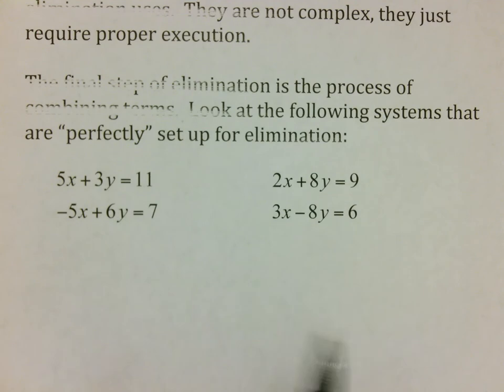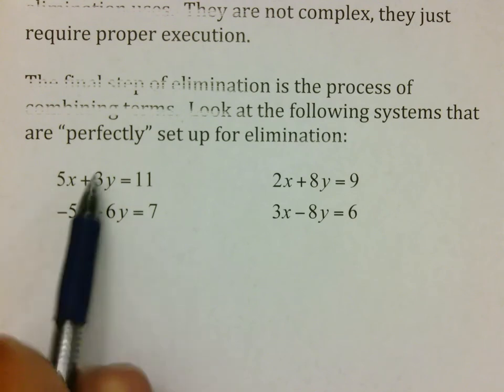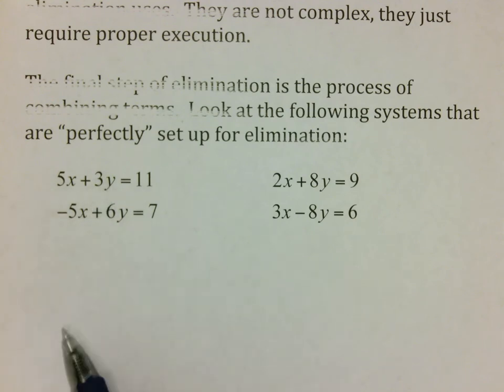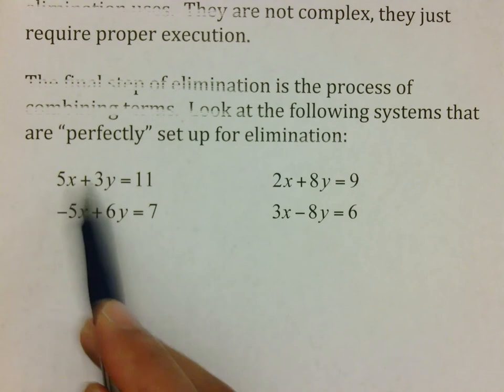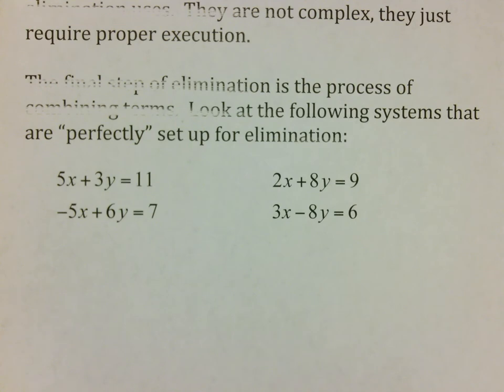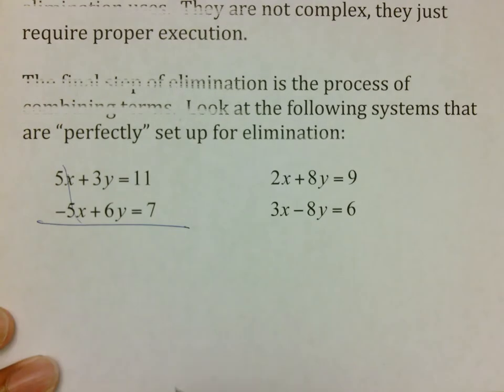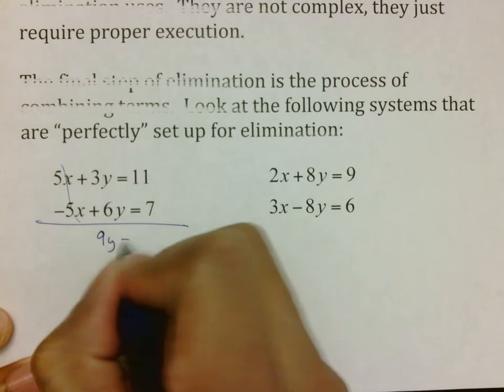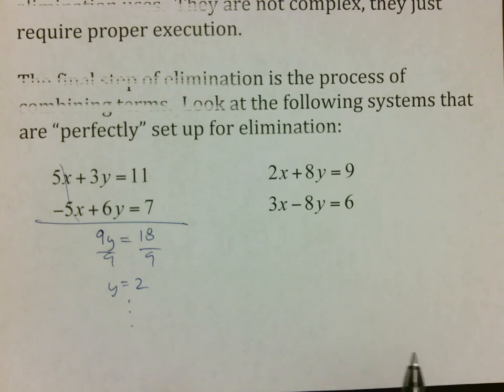The final step is the process of actually combining terms, which is where you eliminate things. If you look at these two systems here, they are perfectly set up for elimination. You have 5x here, negative 5x here. The key thing about elimination is that your terms should be lined up. 5x, 3y, 11, notice that the x's are over each other, the y's are over each other, equal signs lined up, numbers lined up. If you were to add 5x and negative 5x, they cancel. 3y and 6y make 9y. 11 plus 7 makes 18. And notice that we can now divide by 9 to get y equals 2.